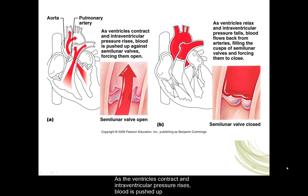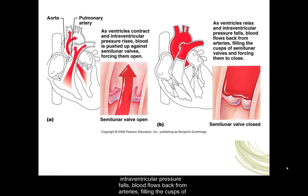As the ventricles contract and intraventricular pressure rises, blood is pushed up against the semilunar valves, forcing them open. As the ventricles relax and intraventricular pressure falls, blood flows back from the arteries, filling the cusps of the semilunar valves and forcing them to close.